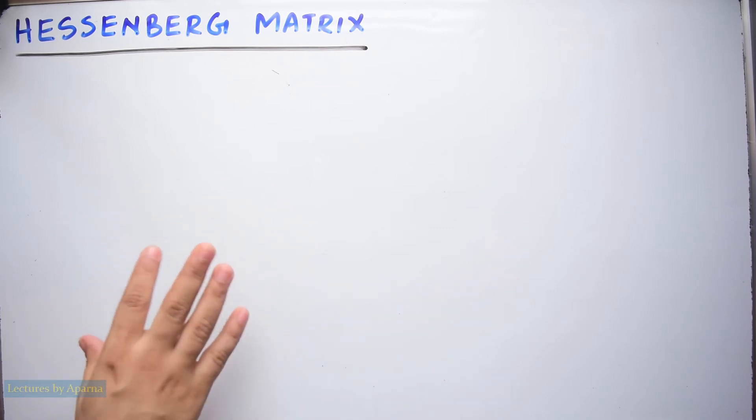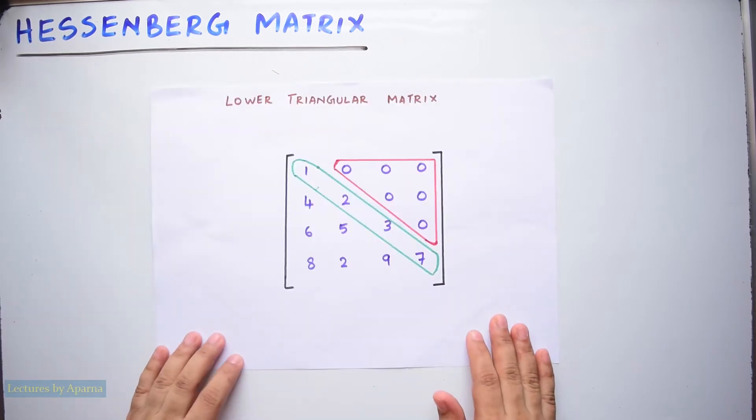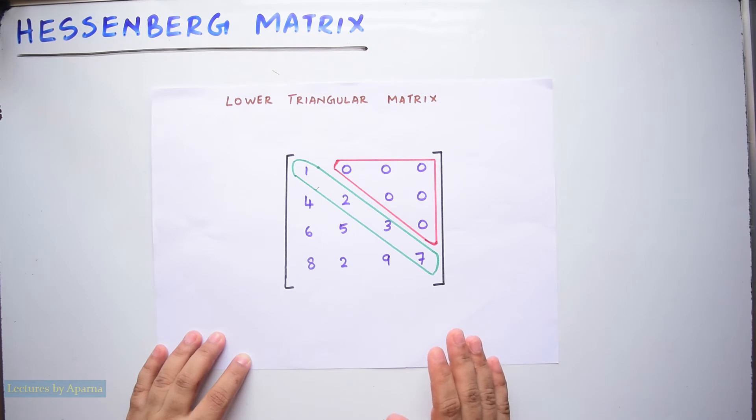Triangular matrix is of two types, lower triangular matrix and upper triangular matrix. A lower triangular matrix will have all elements above the main diagonal zero. This is the main diagonal, all elements above it will be zero. So this is a lower triangular matrix.